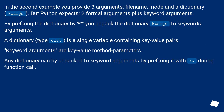In the second example you provide 3 arguments: file name, mode, and a dictionary — kwargs. But Python expects 2 formal arguments plus keyword arguments. By prefixing the dictionary with ** you unpack the dictionary kwargs into keyword arguments.